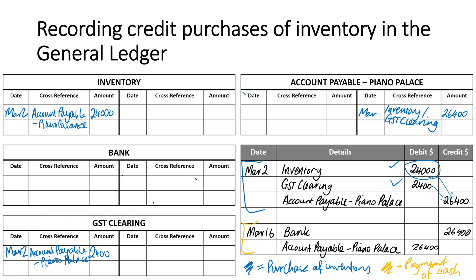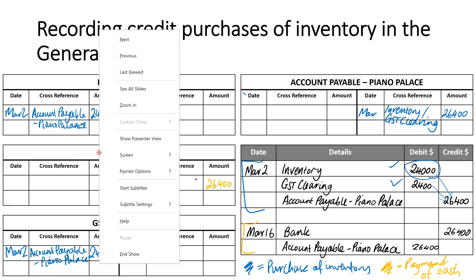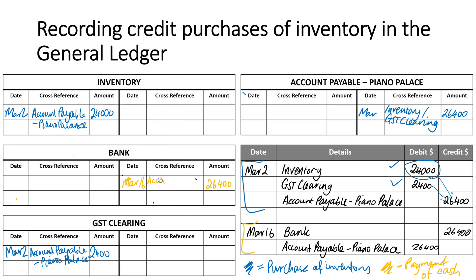That covers the March 2nd transactions. I also need to record what happened on the 16th. On March 16, bank was credited $26,400, and the cross reference is account payable. Then over in accounts payable, I debited $26,400 on March 16, and the cross reference is bank.